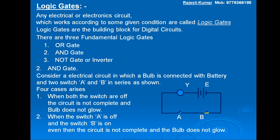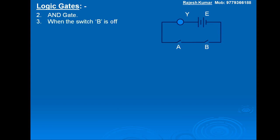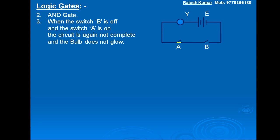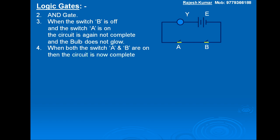Third case: when switch B is off and switch A is on — see in the diagram, switch A is on — the circuit is again not complete and the bulb does not glow. Fourth case: when both switch A and B are on — see in the diagram, both switches are on — then the circuit is now complete.